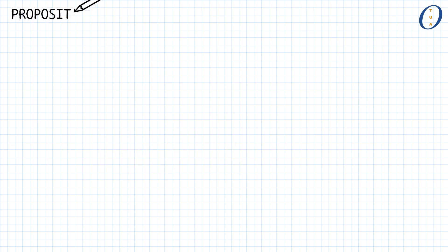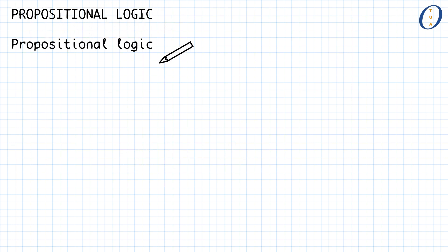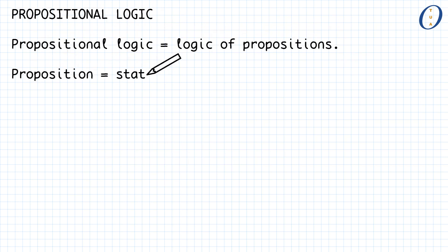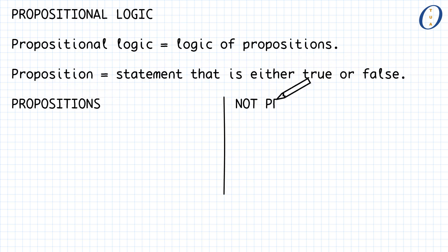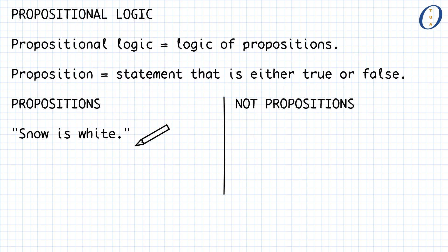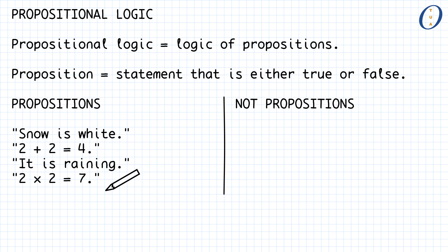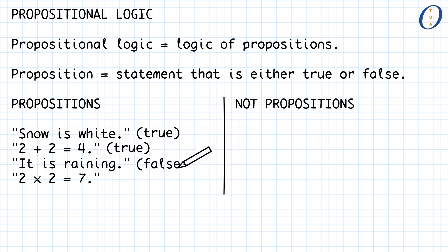We have to discuss a little bit about propositional logic. Propositional logic is a logic of propositions, and propositions are simply statements that are either true or false. Statements such as 'snow is white,' '2 plus 2 is equal to 4,' 'it is raining,' or '2 times 2 is equal to 7' are all propositions — the first two being true and the latter two being false, at least at the moment when I'm typing this up.